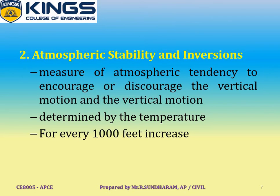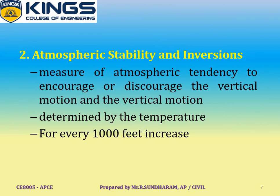Due to this temperature inversion, the atmosphere is stable and very little mixing of air with pollutants takes place — this is called atmospheric stability. Under these conditions, pollutants in the air do not dilute. Occurrence of inversion is very common in winter and also in autumn. During inversion, visibility is highly reduced and pollutants are at maximum.